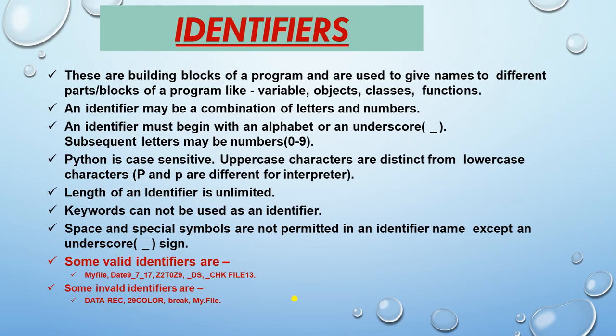Subsequent characters may include numbers 0 to 9, and a letter can be followed by any number. Python is case sensitive — uppercase characters are distinct from lowercase characters. The length of an identifier is unlimited. Keywords cannot be used as identifiers. Spaces and special symbols are not permitted in an identifier name except the underscore sign.